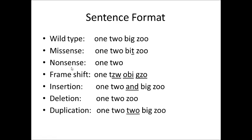Next, let's look at a frameshift mutation. The sentence reads: one, two, ob, zoo. What happened? I inserted a Z in there. If we take out the Z — hiding it — and read the sentence, it says one, T-W-O-B-I-G-Z-O. All we did is move everything over by one; we shifted — we frameshifted. A frameshift can happen with an insertion, like inserting a Z, or with a deletion of one or two letters. Frameshift will affect everything downstream of that mutation.